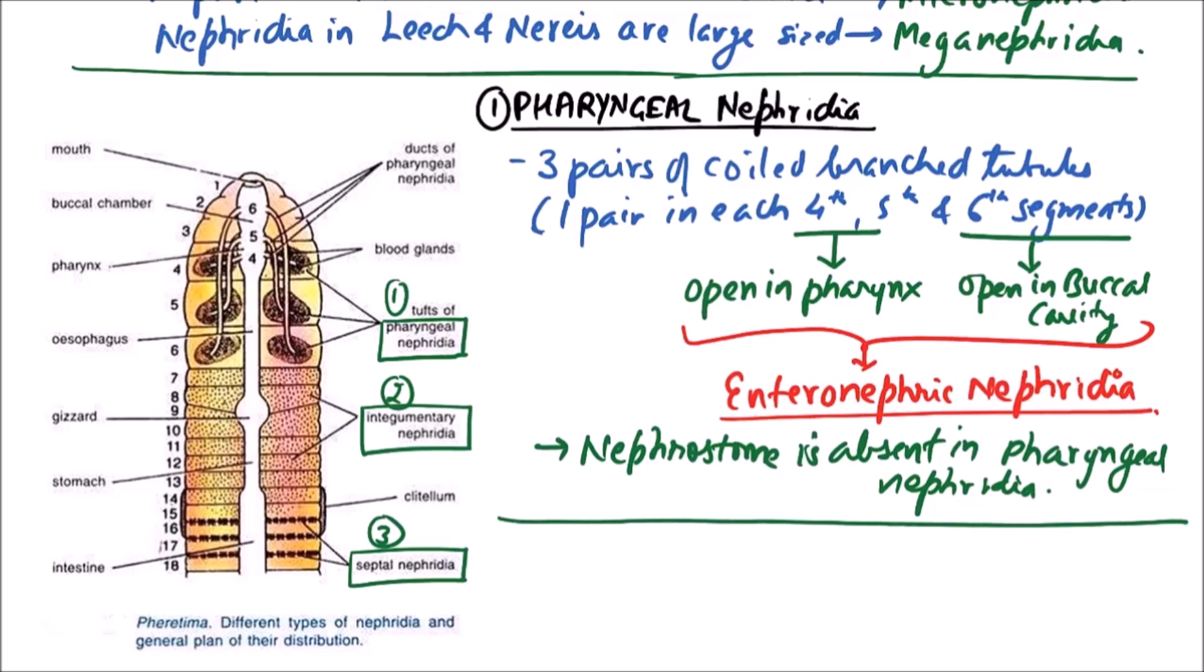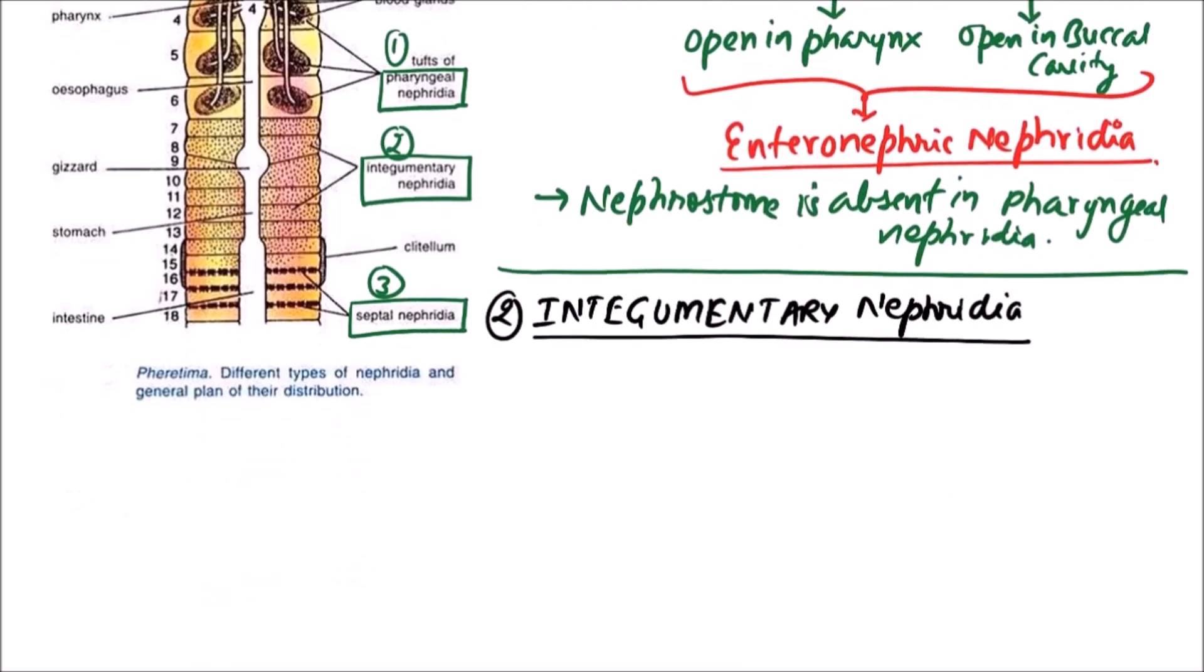Now the next one is integumentary nephridia. In integumentary nephridia, these are microscopic and V-shaped. These are scattered over the dorsal surface of body.